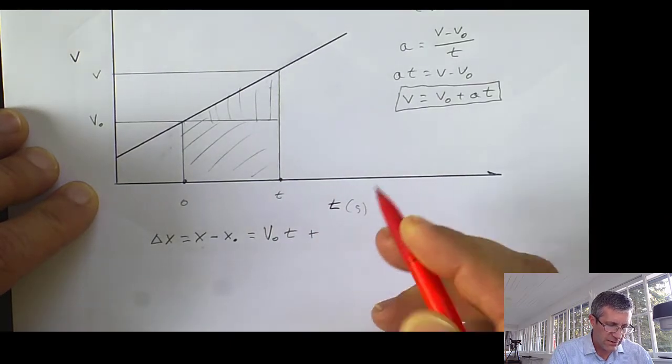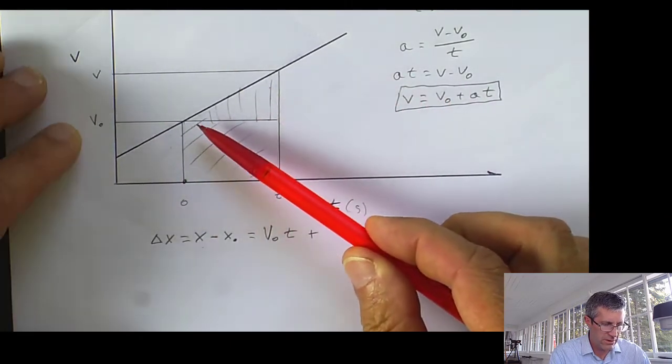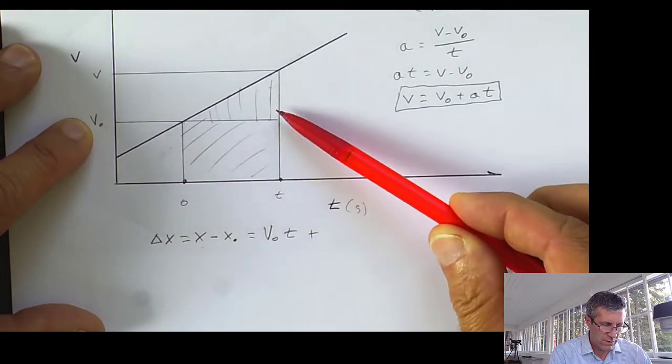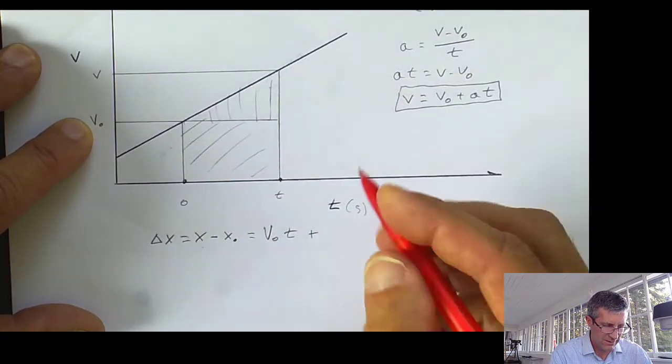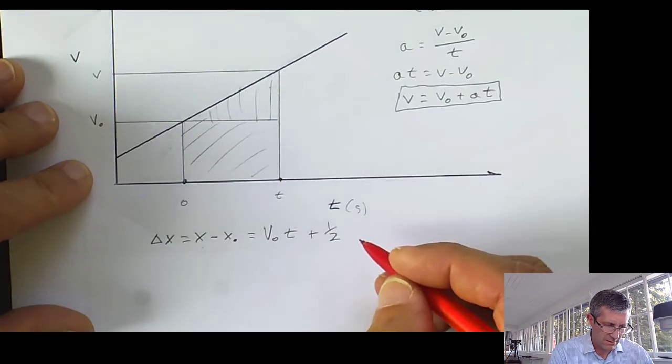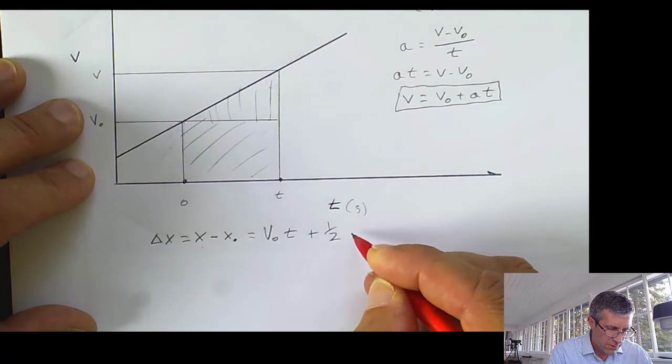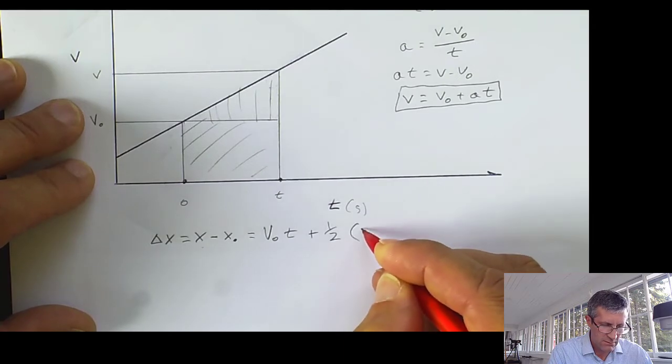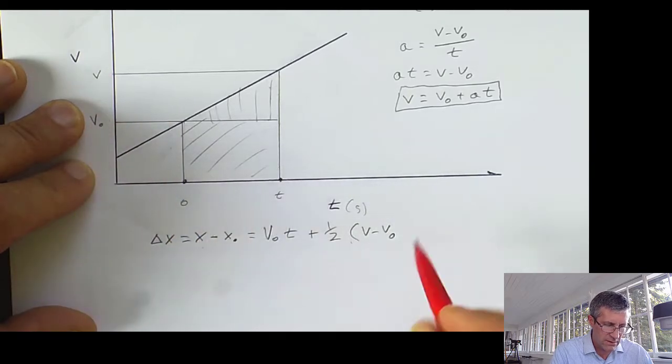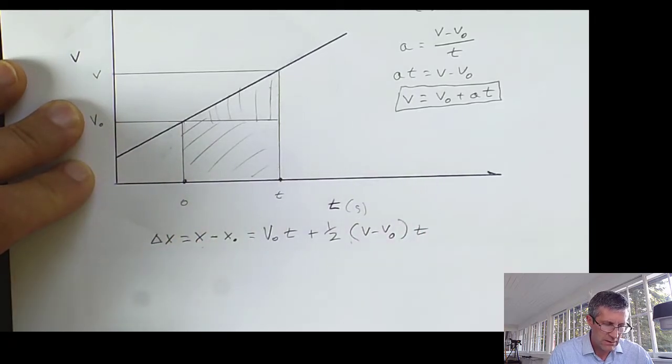And I'm going to add to this the area in here, which is going to be 1/2 times V minus V₀, times time. So 1/2 the height, that distance, times time.